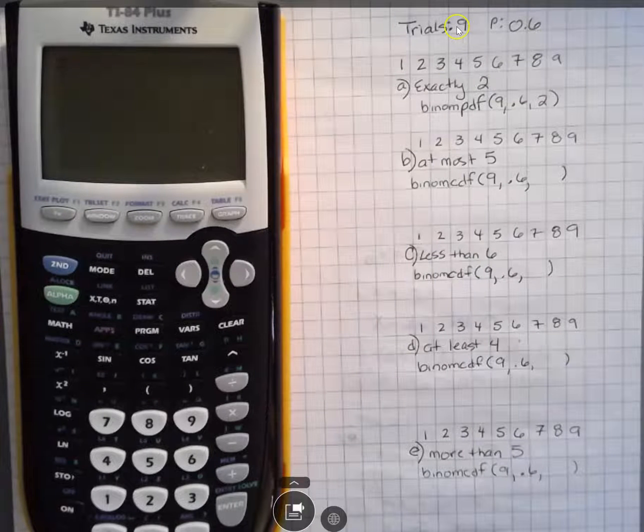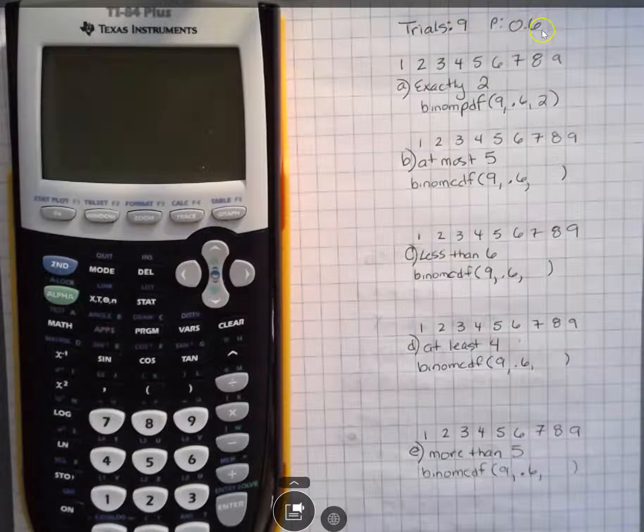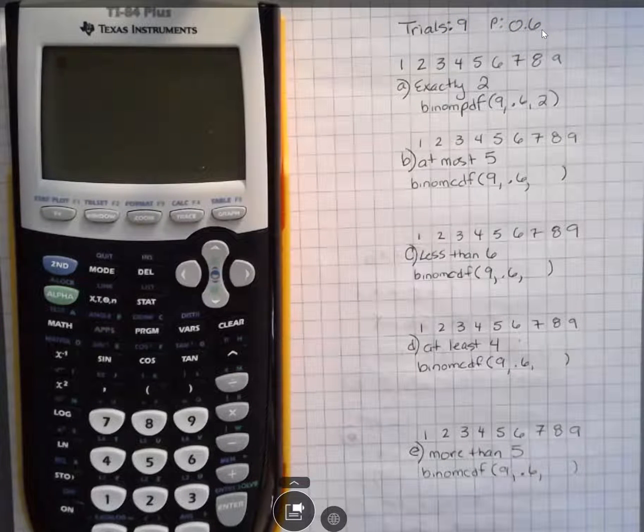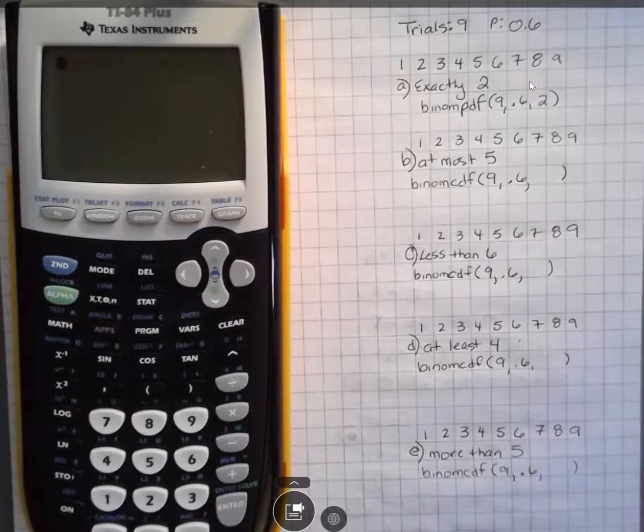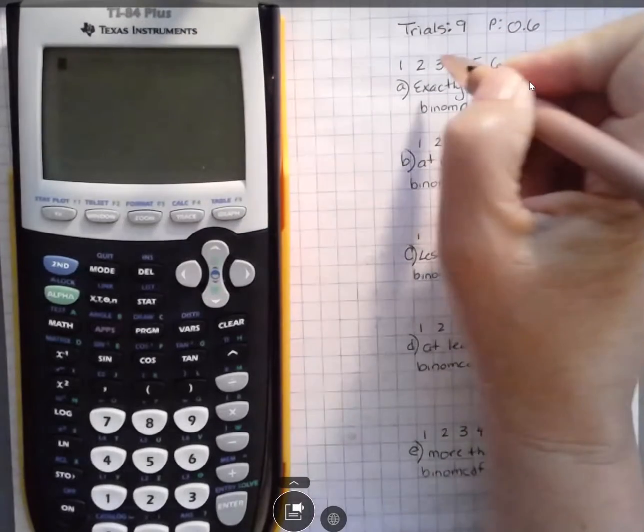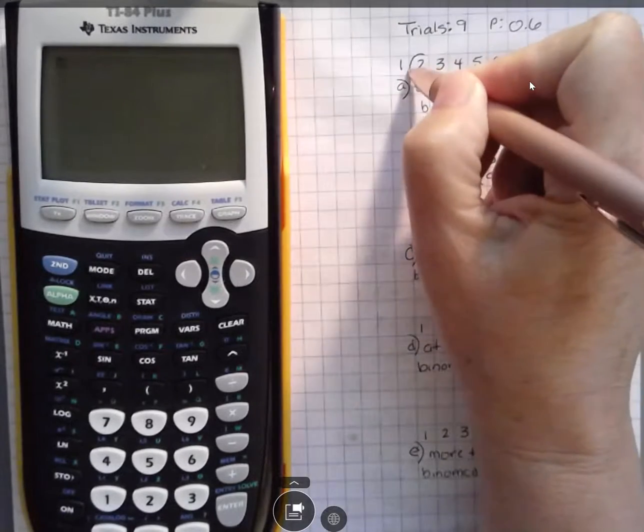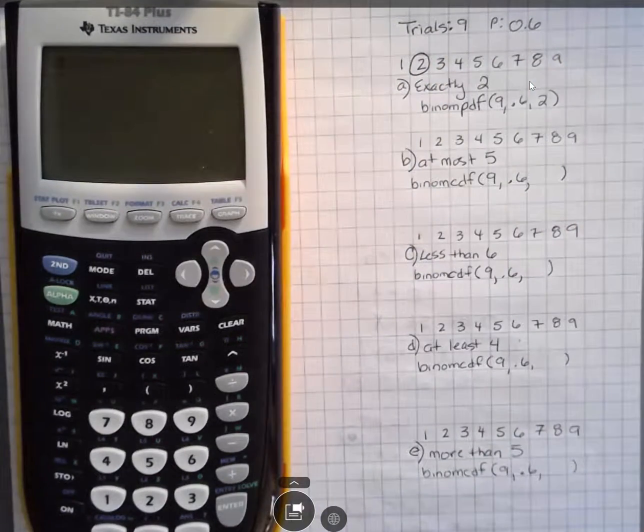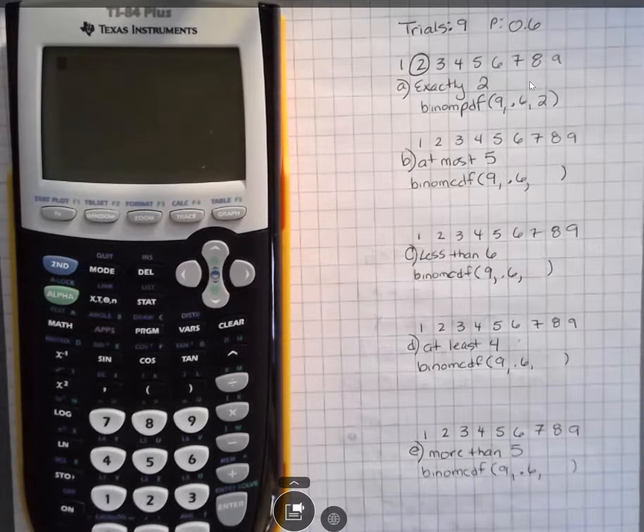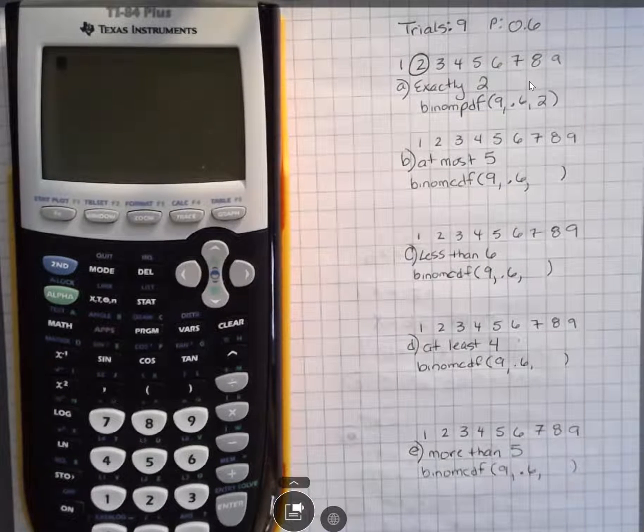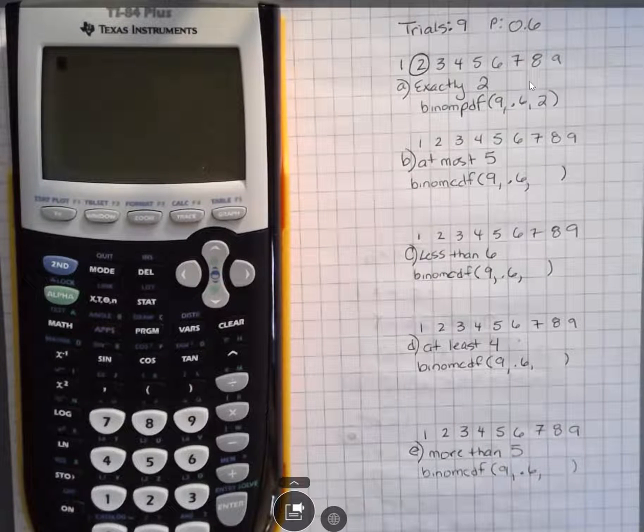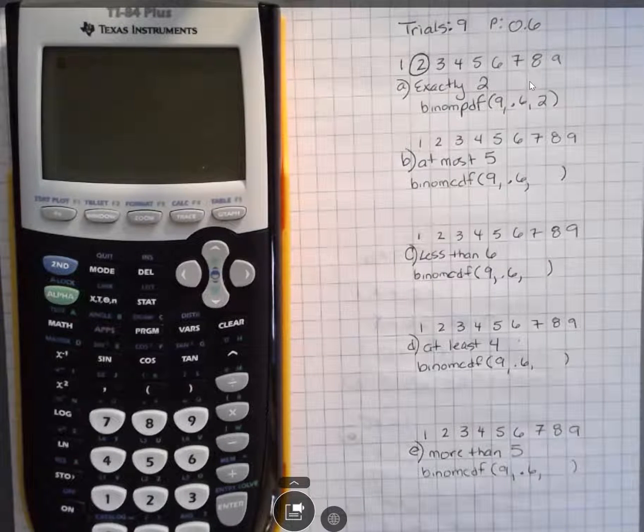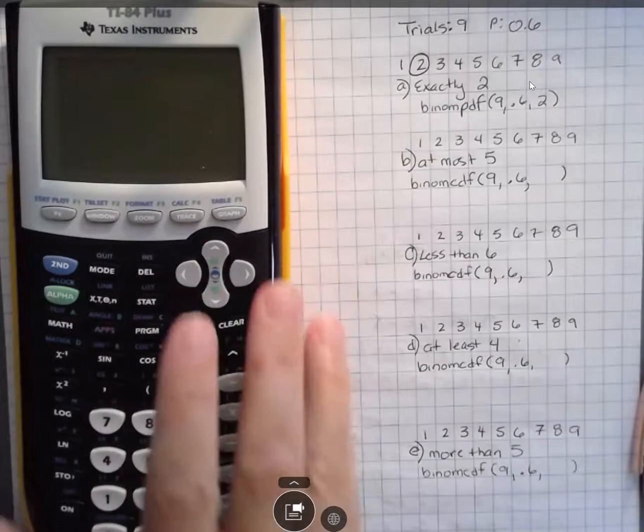So we have 9 trials and we have a probability of 60%. What is the first one said, what if exactly 2 people? So when we think about that, here's 9 people that we talked to and exactly 2 people. These are the possibilities. In this one, exactly 2 people in our study said that they had that much debt.